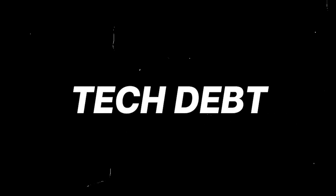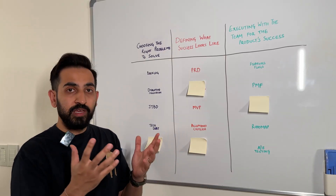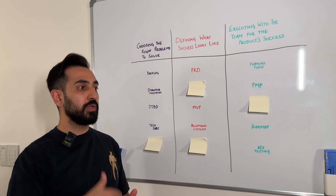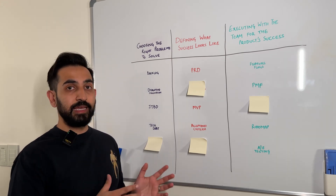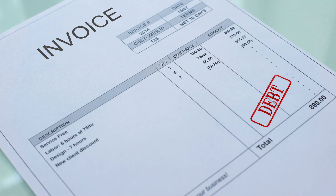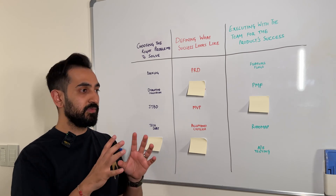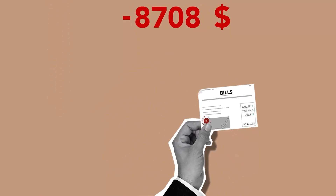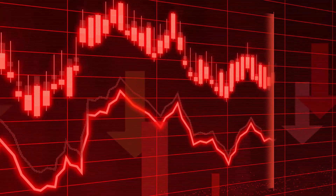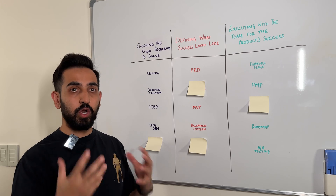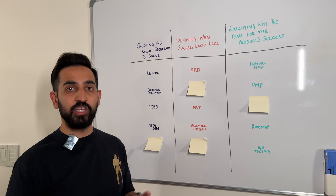Tech debt is the cost of maintaining and supporting a product over time. It arises as a result of taking shortcuts during the development of a product to get it out the door and ship to customers as quickly as possible. Like any debt, tech debt is a way of borrowing development effort from the future to the present. But if this tech debt goes unaddressed for long periods of time, it can spell disaster for the product because many things will stop working and bugs will arise from shaky underlying infrastructure.